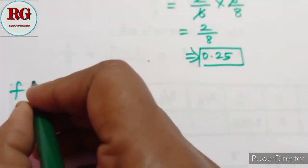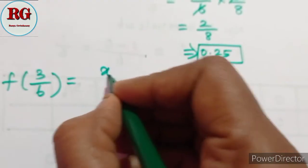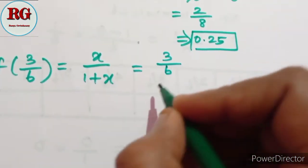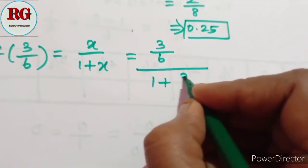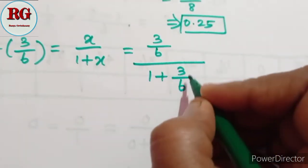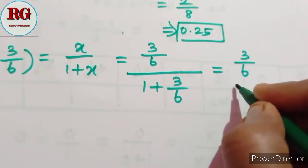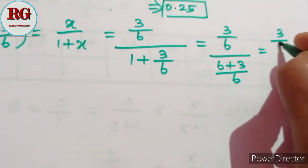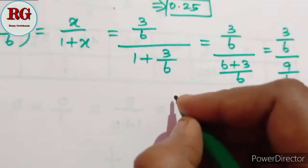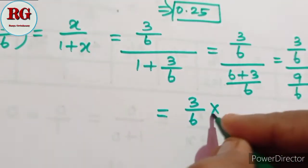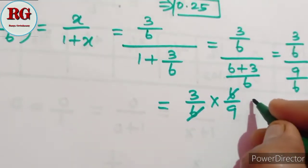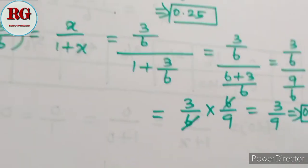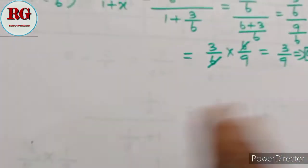Next, f(3/6): using the same formula, (3/6) divided by (1 plus 3/6). Taking LCM gives (3/6) divided by (9/6). Flipping: (3/6) multiplied by (6/9) equals 3/9, which equals 0.333.